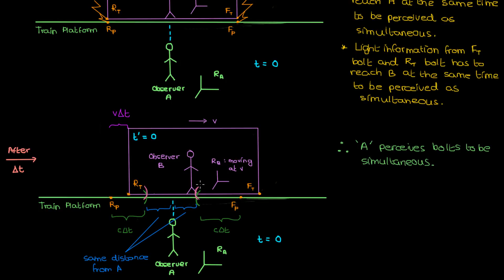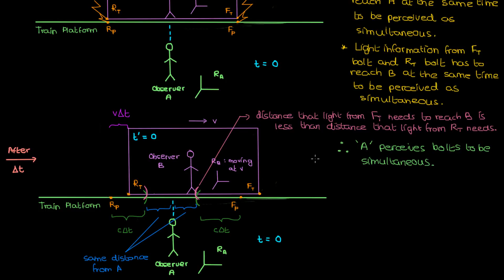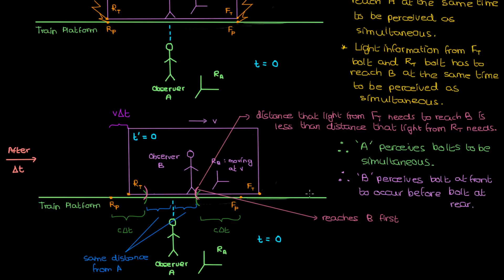However, this isn't the case for observer B. Because observer B is moving forward, the distance the light from the front of the train needs to cover to reach B is less than the distance the light from the rear needs to cover. Since both lights travel at the same speed C according to postulate 2, the light from the front of the train reaches observer B first. As a result, observer B perceives the lightning bolt from the front to occur before the lightning bolt from the rear — not simultaneously.